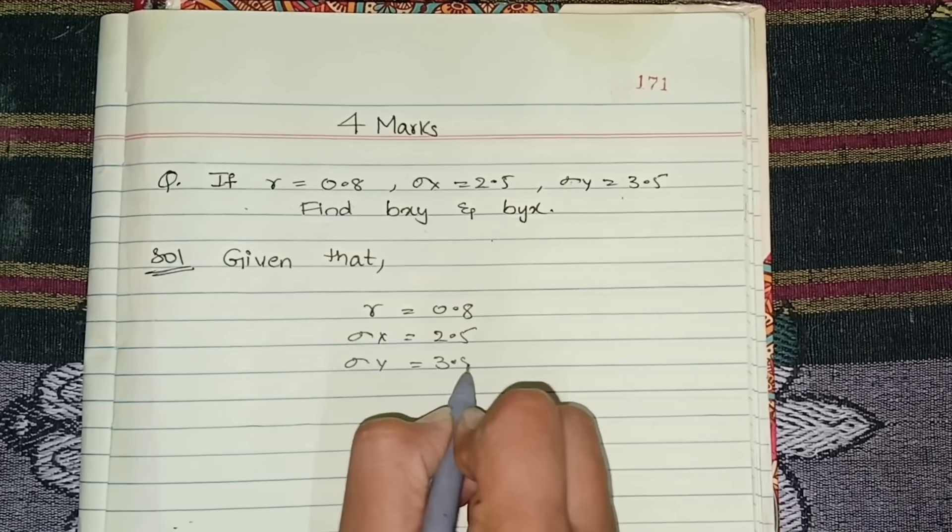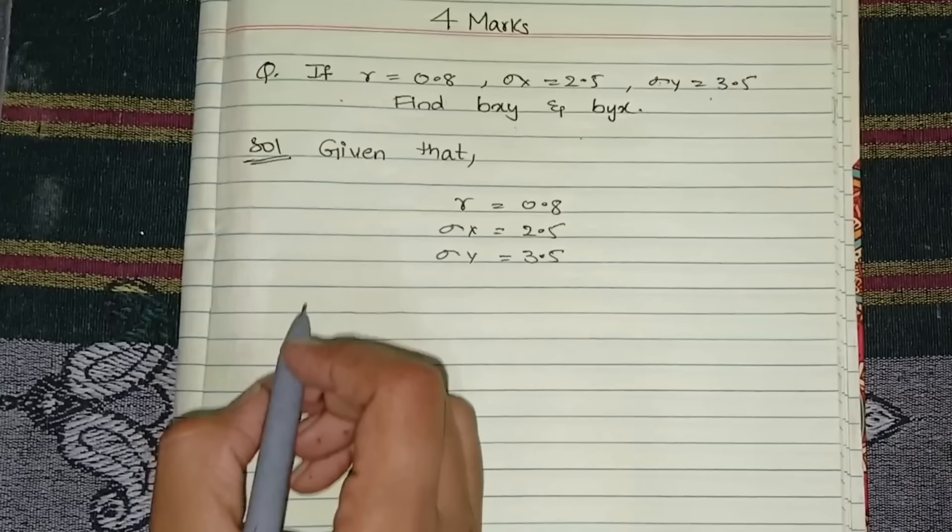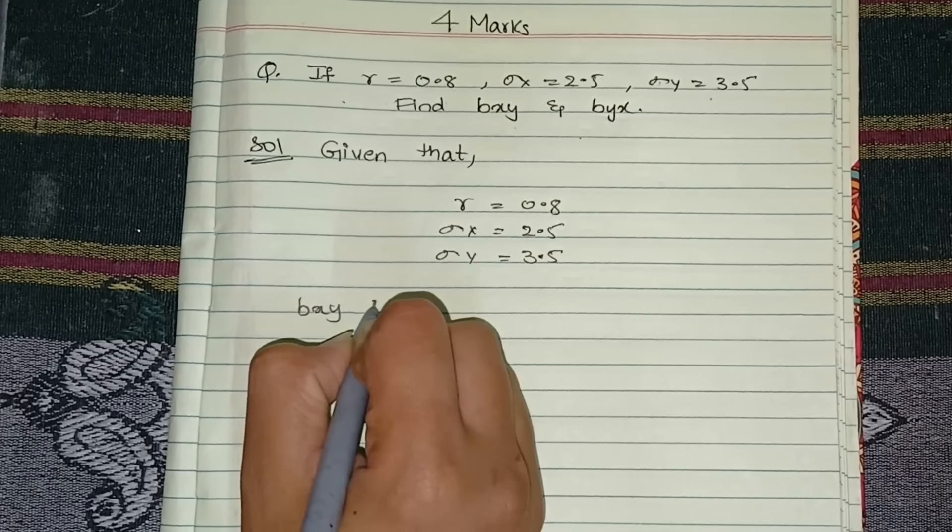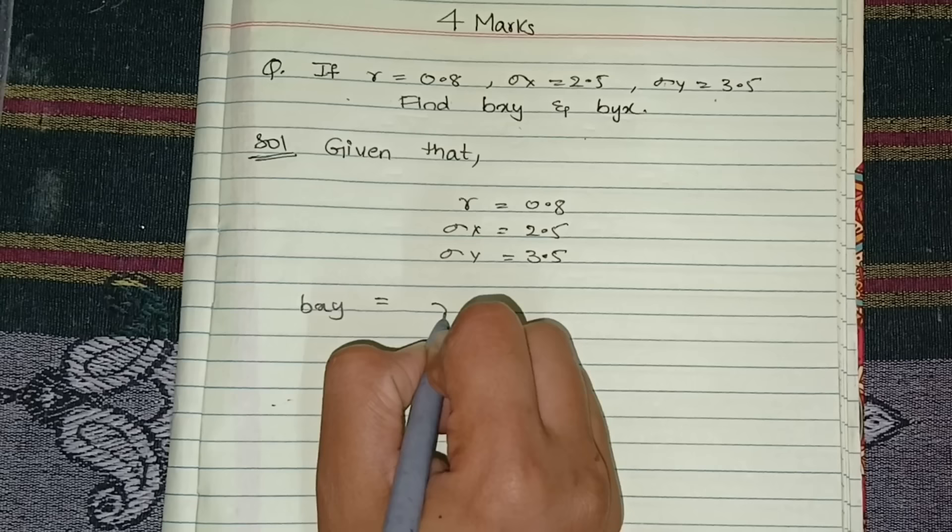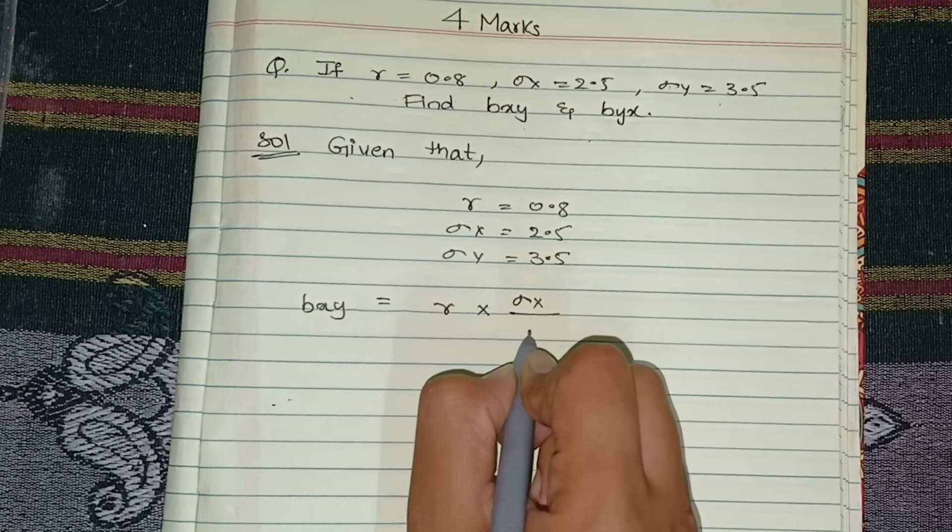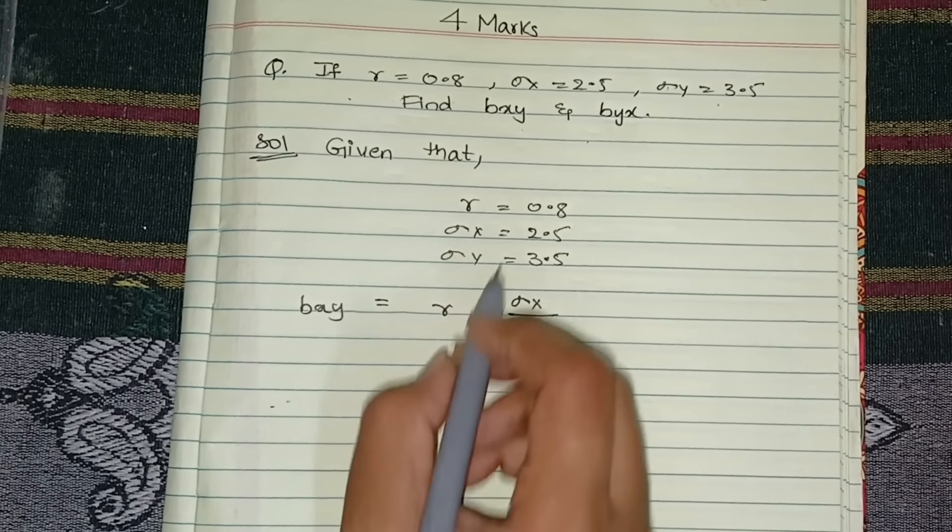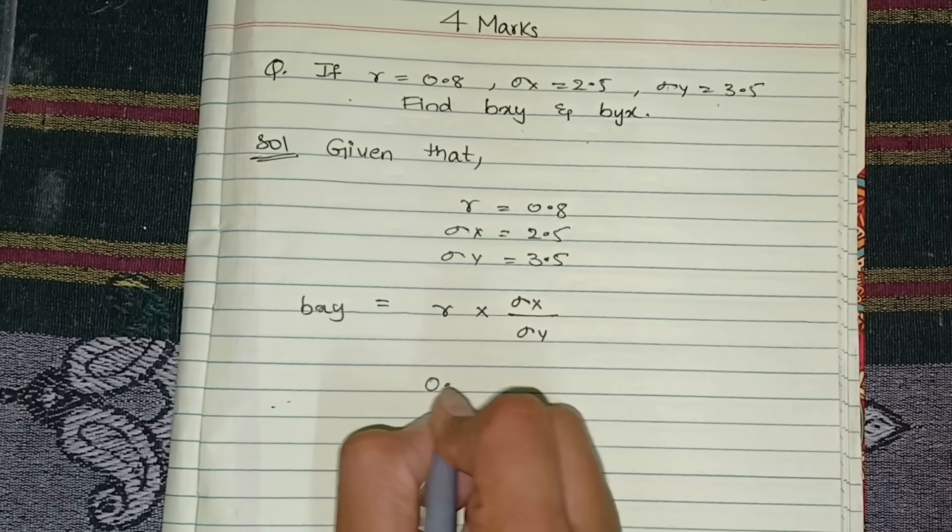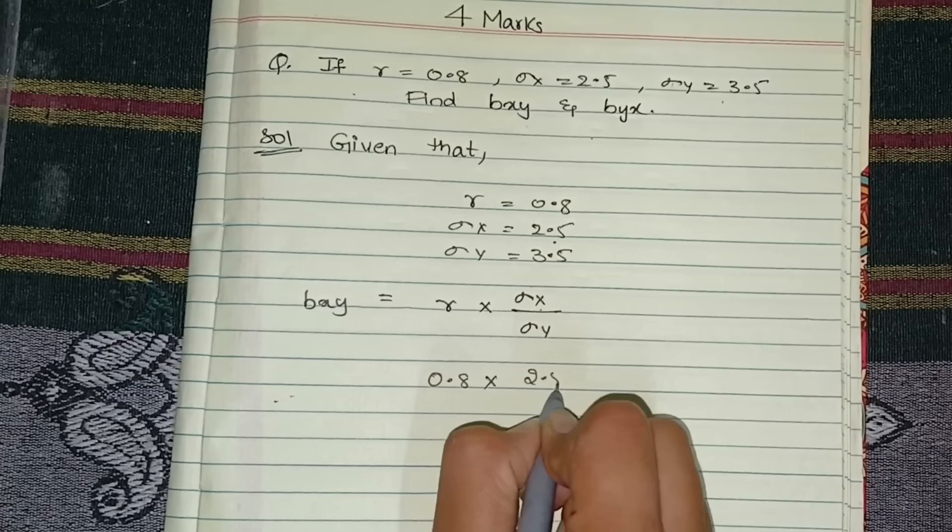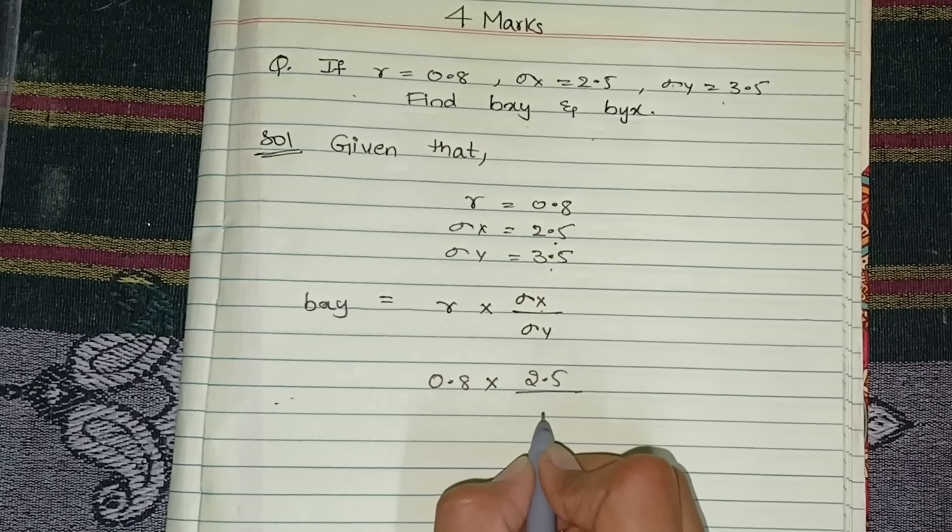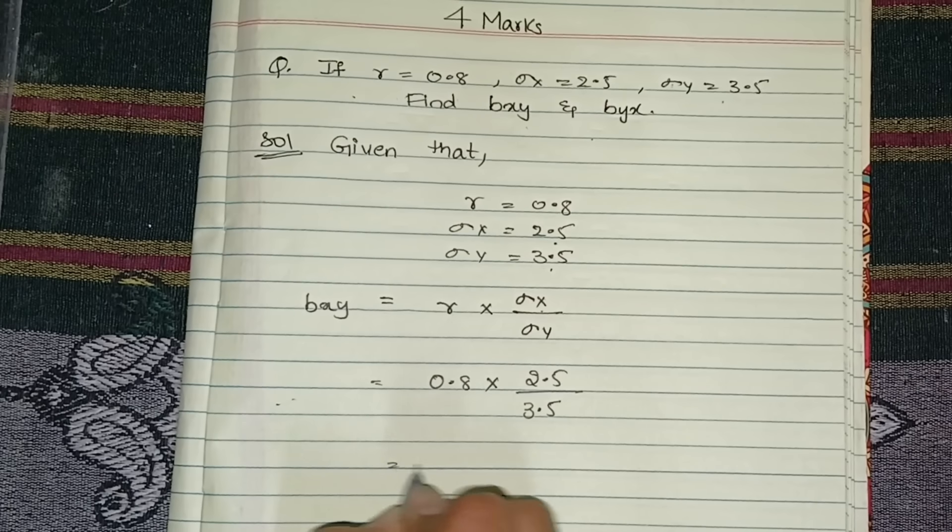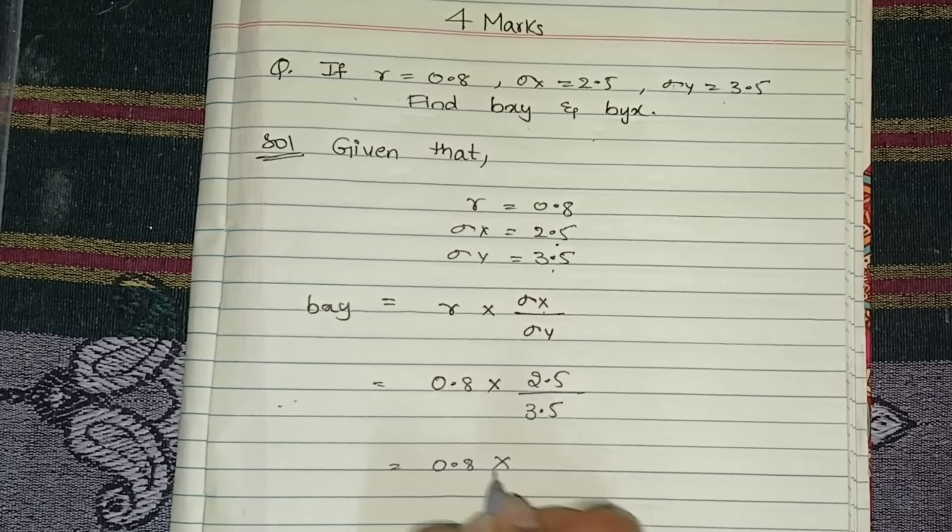We are calculating bxy first. So bxy is equal to r into standard deviation of x divided by standard deviation of y. How much they have given? 0.8 into standard deviation of x is 2.5 divided by standard deviation of y, 3.5.